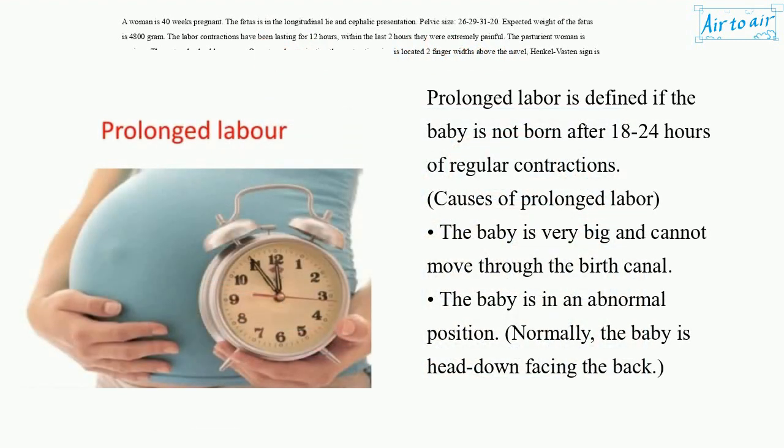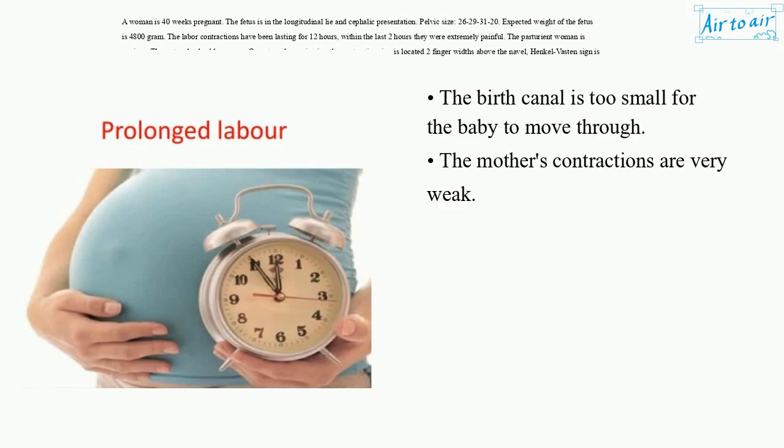Prolonged labor is defined as when the baby is not born after 18 to 24 hours of regular contractions. Causes of prolonged labor include: the baby is very big and cannot move through the birth canal; the baby is in an abnormal position (normally the baby is head down facing the back); the birth canal is too small for the baby to move through; or the mother's contractions are very weak.